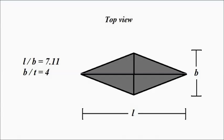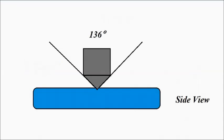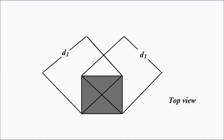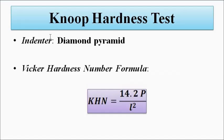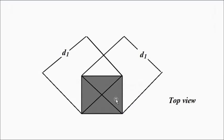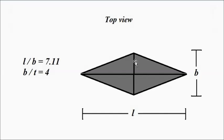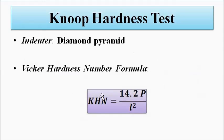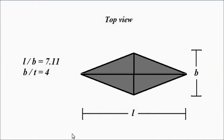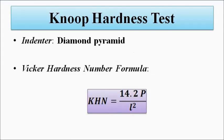Always remember: for both Vickers and Knoop hardness tests a diamond pyramid is used as the indenter, but for Vickers both diagonal lengths of the indentation are the same (d1), whereas for Knoop the diagonals are of different lengths — one longer, one shorter. The Knoop hardness number is given by: KHN = 14.2 × P / L², where P is the load applied and L is the longer diagonal length.